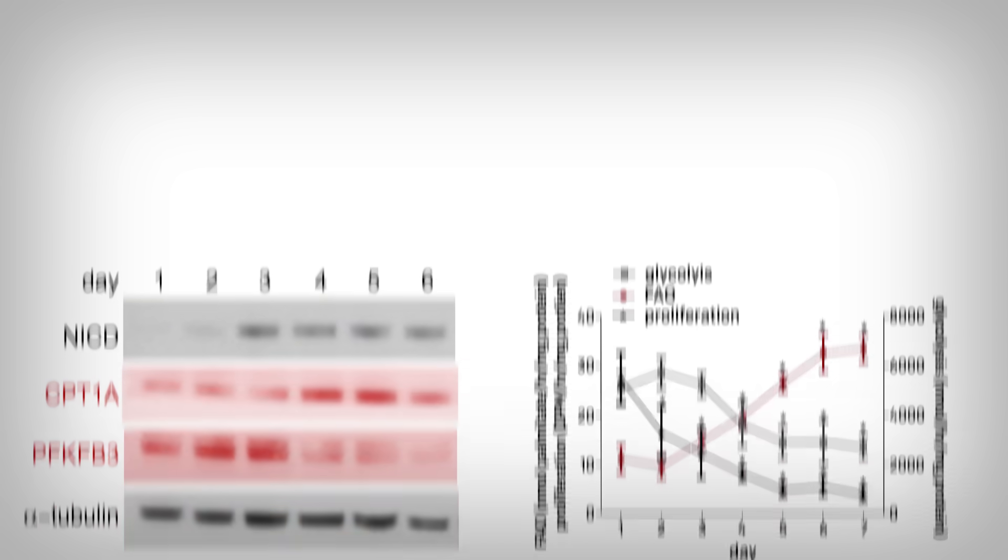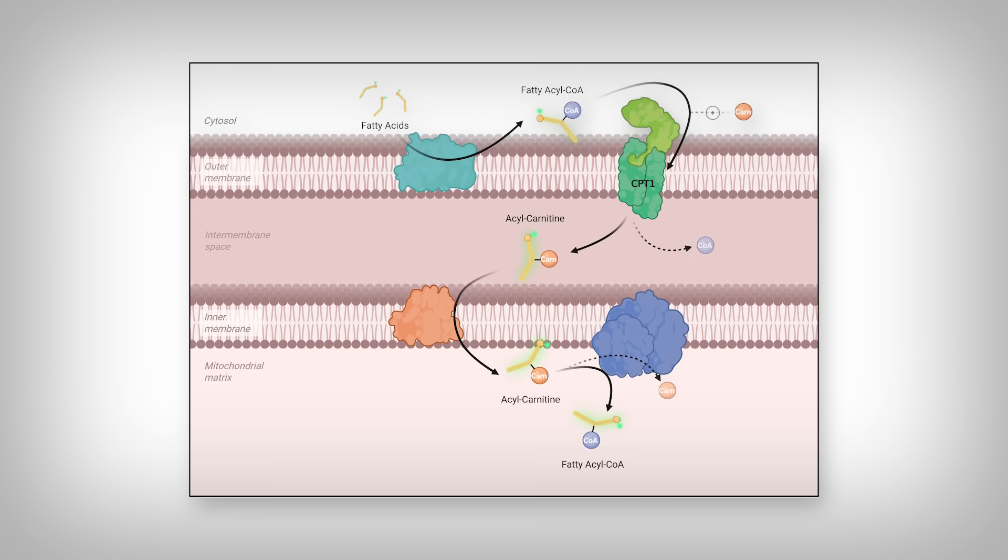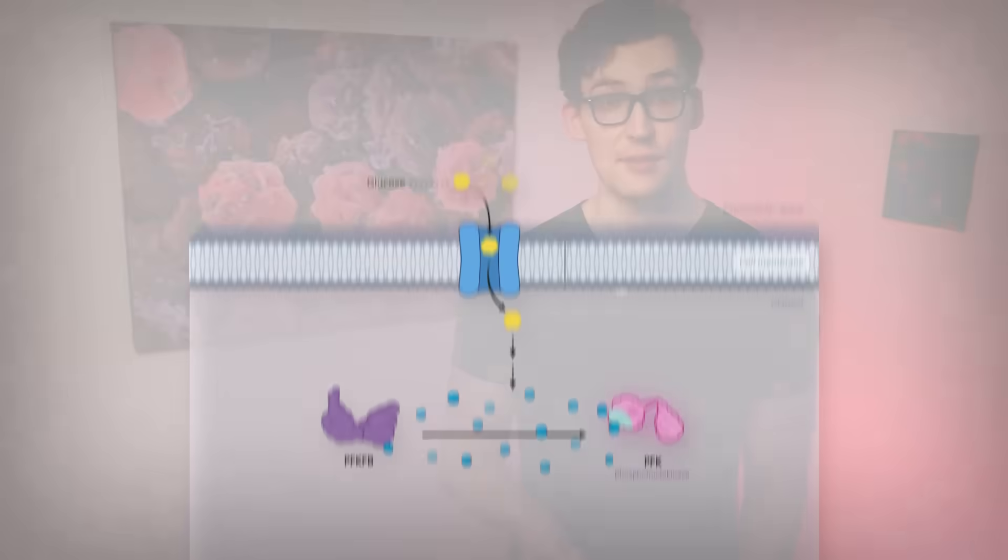Why does any of that matter? Well, it matters because CPT1 is located inside the outer mitochondrial membrane. Yes, those organelles that produce cellular energy. The powerhouse of the cell, as some might say. It is responsible partly for allowing fat molecules into the mitochondrion to be metabolized for usable cellular energy. So it makes sense that the cells would be producing more of it as fat metabolism increases.